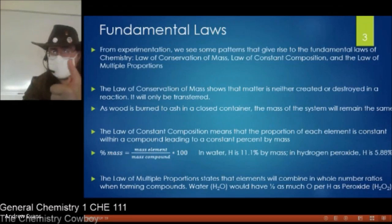The law of constant composition means that there is going to be a consistent proportion of each element within a compound, and that's not going to change. And we can measure that as a percent by mass. You see, the percent mass is mass element over mass compound. In water, there is 11% H by mass, and the rest of it is oxygen. In hydrogen peroxide, it's 5.88% mass.